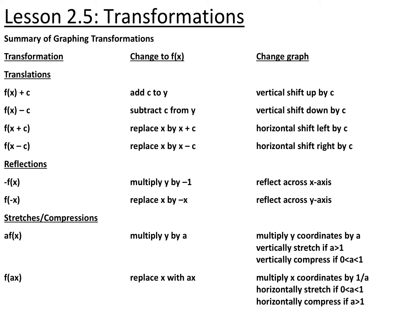For stretches and compressions or dilations, if you have a value on the outside being multiplied by something, you multiply all of your y-coordinates by that amount. If a is greater than one, it vertically stretches it. If a is between zero and one, it vertically compresses it. If something is being multiplied by x, you do the opposite — multiply all x-coordinates by one over that. So if the value is between zero and one, it's actually a horizontal stretch, and if it's greater than one, it's a horizontal compression.